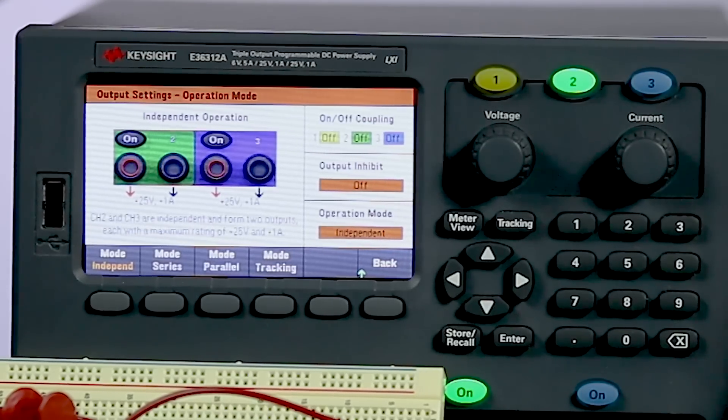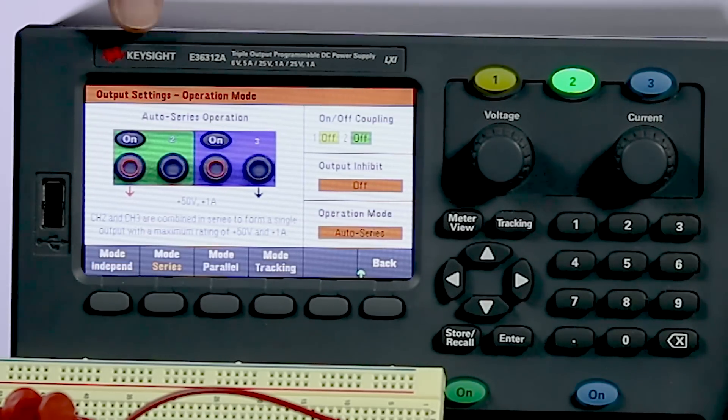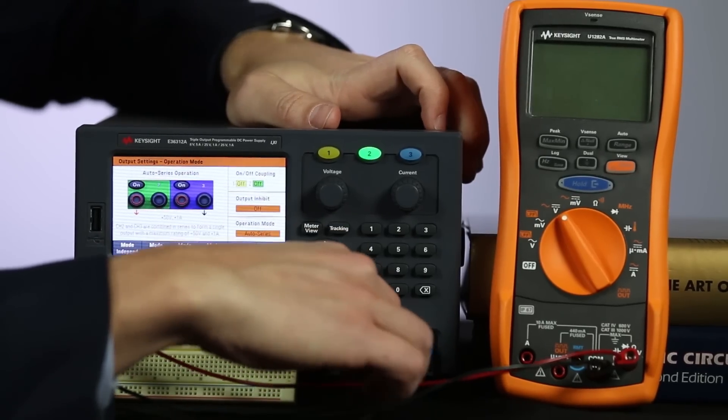In independent, all the channels are operating independently of each other. In series mode, I can now use the plus terminal from channel 2 and the ground terminal from channel 3. So, I'm going to slide this over.